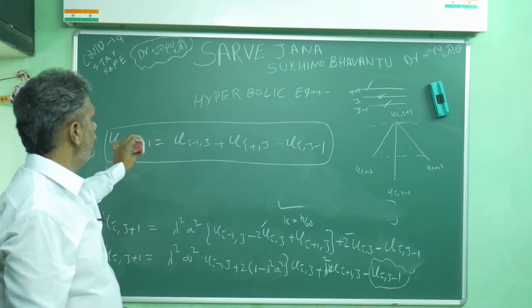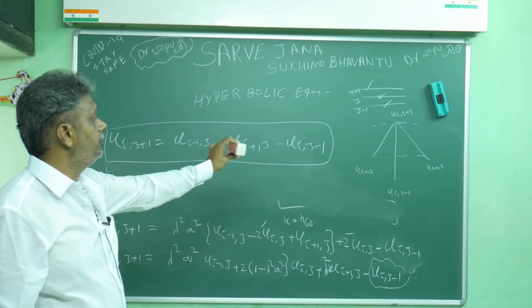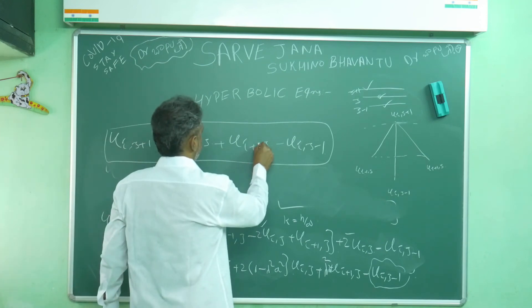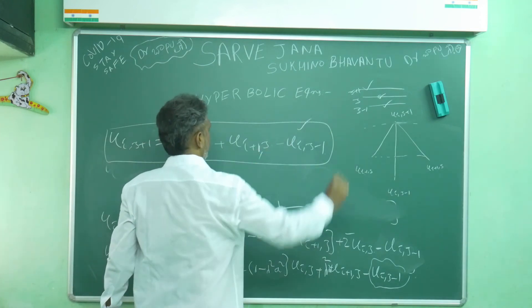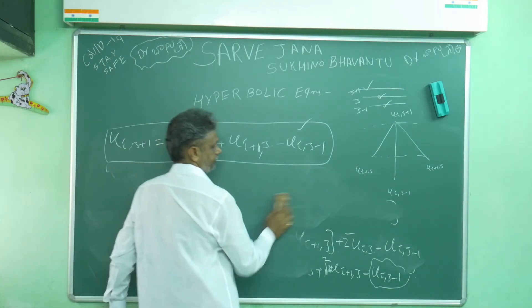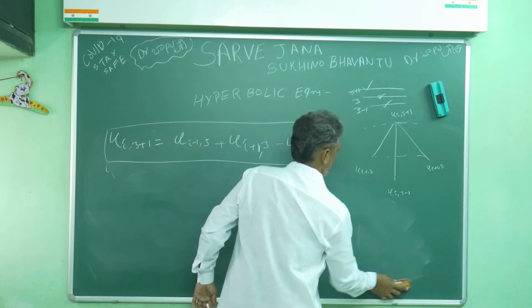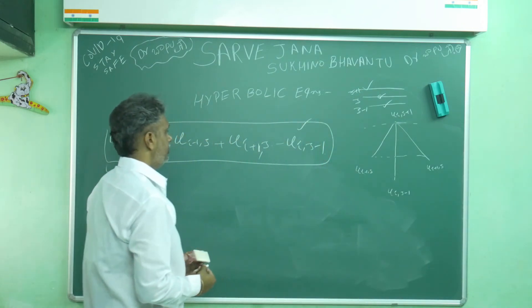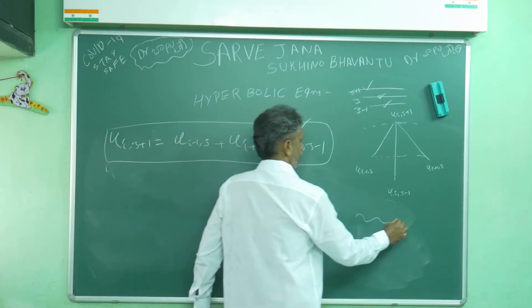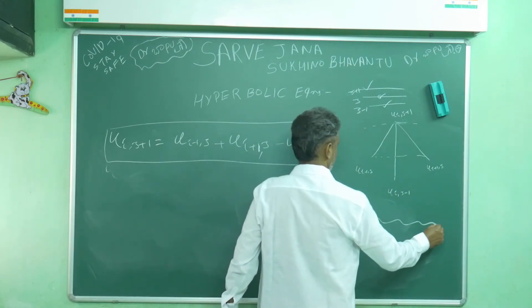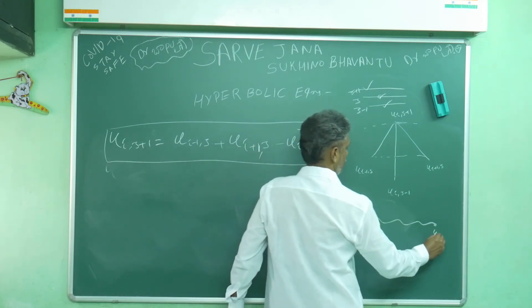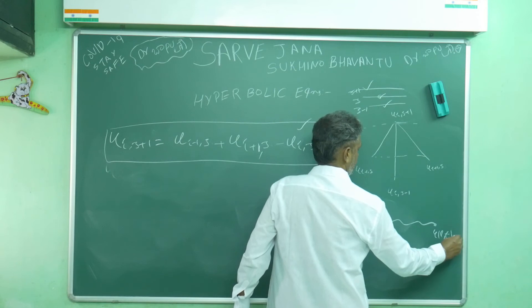Remember the formula: u(i,j+1) = u(i-1,j) + u(i+1,j) - u(i,j-1). The boundary conditions for the string are: u(0,t) = 0 and u(l,t) = 0.